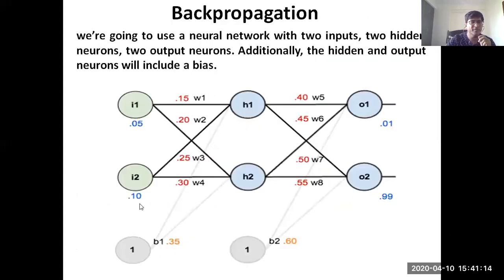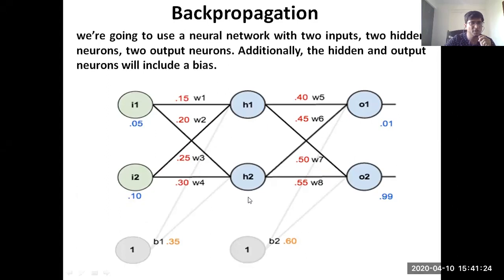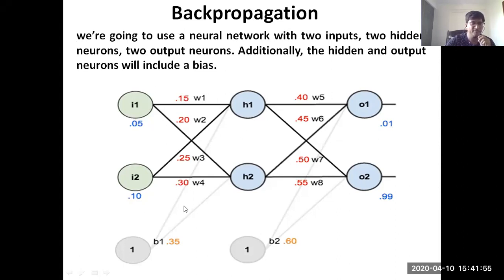For this example, I'll be taking a sample example where we have two inputs in the input layer, two hidden layers with two neurons each, and two neurons in the output layer. The input values are 0.05 and 0.10, the corresponding target values are 0.01 and 0.99, and we have a set of random weights corresponding to the input-to-hidden and hidden-to-output layers.